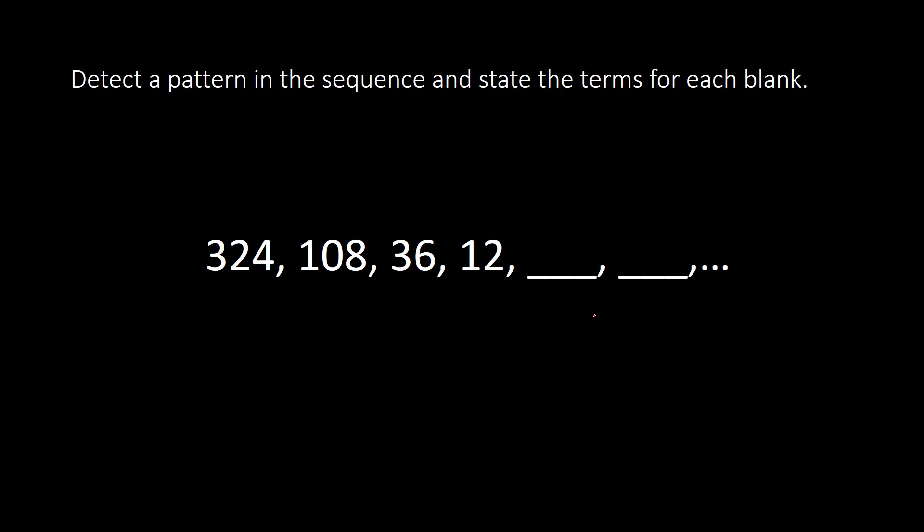Here's another example. Take a moment and try to find the pattern yourself. Once you have thought for yourself, I'm going to walk you through and explain the pattern. Notice here, each time we're dividing by 3. 324 divided by 3 is 108, 108 divided by 3 is 36, and 36 divided by 3 is 12. If I keep that pattern going, 12 divided by 3 would give me 4, and then 4 divided by 3 would give me 4 over 3, or 4 thirds.